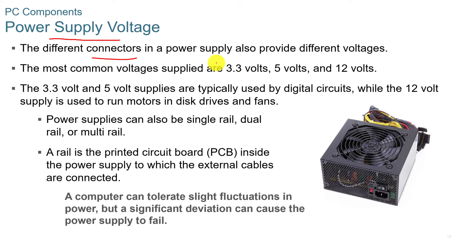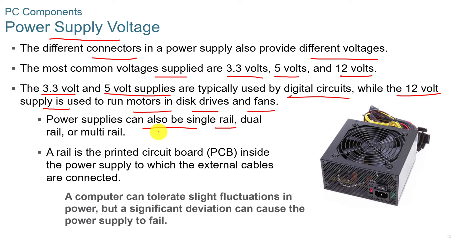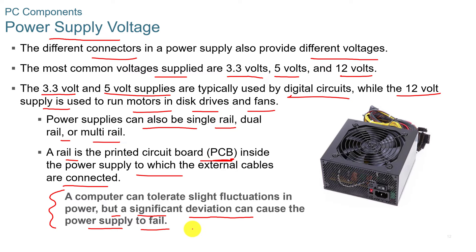The different connectors in a power supply provide different voltages. The most common voltages are 3.3 volts, 5 volts, and 12 volts. The 3.3 and 5 volt supplies are typically used by digital circuits, while the 12 volt supply is used to run motors, disk drives, and fans. Power supplies can also be single rail, dual rail, or multi-rail — a rail is the printed circuit board inside the power supply to which external cables are connected. A computer can tolerate slight power fluctuations, but significant deviations can cause the power supply to fail, so you always want a good UPS or uninterruptible power supply on your computer.